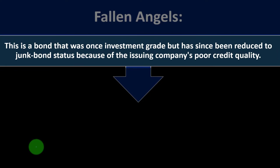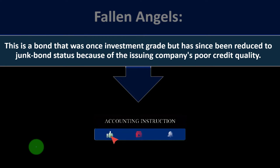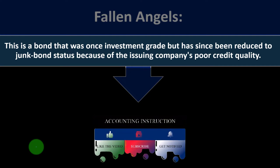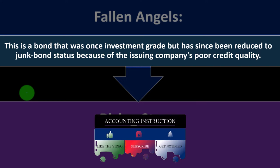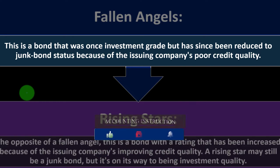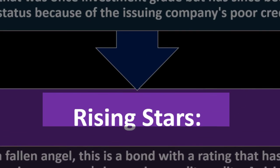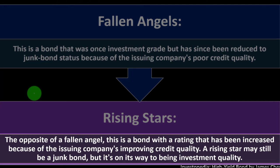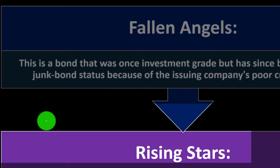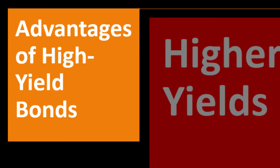High yield bonds are typically broken into two subcategories. First, Fallen Angels — bonds that were once investment grade but have since been reduced to junk bond status due to the issuing company's poor credit quality. Second, Rising Stars — the opposite of a Fallen Angel — bonds whose ratings have been increased because of the issuer's improving credit quality. A rising star may still be a junk bond, but it's on its way to being investment grade.